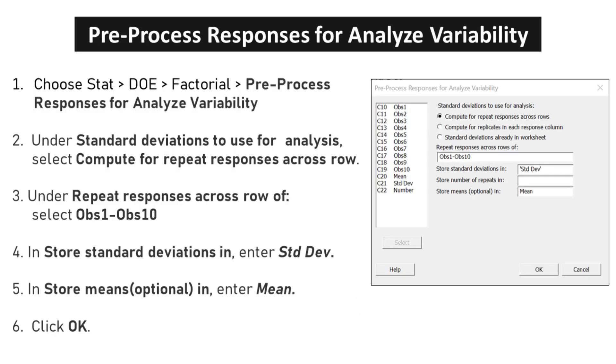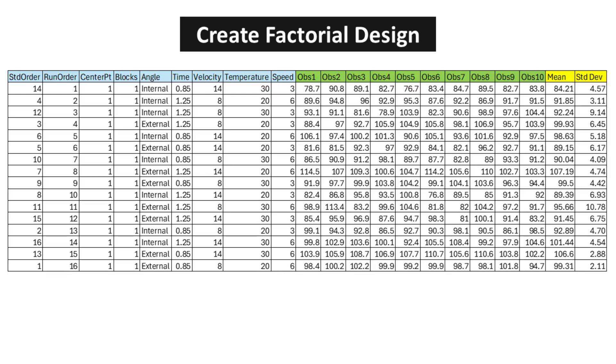Choose STAT, DOE, factorial, preprocess responses for analyze variability. Under standard deviations to use for analysis, select Compute for repeat responses across row, select OBS 1 to OBS 10. In store standard deviations in, enter STD DEV. In store means, optional, enter mean. Click OK. Calculate the mean and standard deviation for each experimental run.